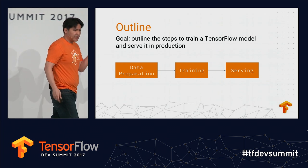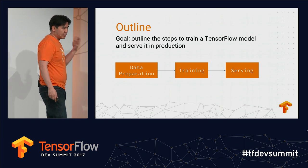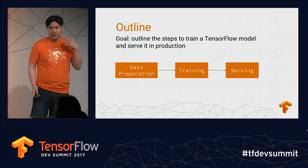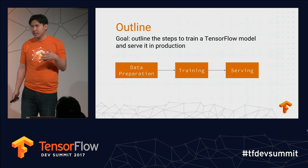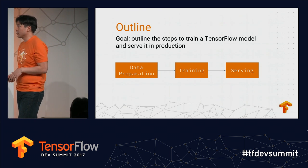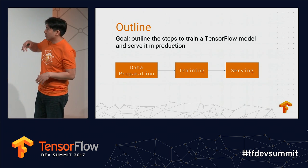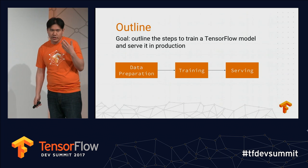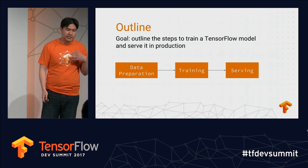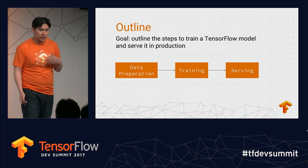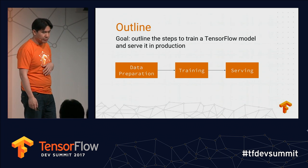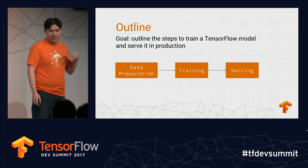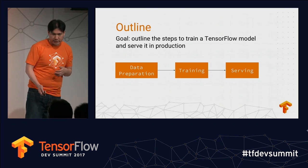First I'm going to talk about all the steps you go from training to serving a model in production, and it typically involves these three steps. Usually the raw data that you have isn't fit for training yet, so you have to do some form of data preparation. After that you do training, and then you serve your model.